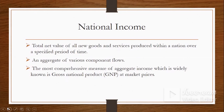The most comprehensive measure of aggregate income is widely known as gross national product. GNP, or sometimes called GNI, is the total income that is earned by a country's factors of production regardless of where the assets are located.